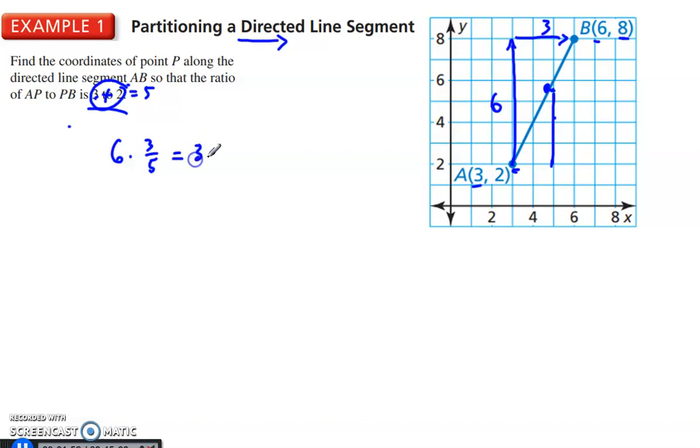3.6, so it goes up 3.6. And then this right here, we want 3 times 3 fifths, and that is 1.8. And so then I would just add on the 1.8 to this value right here, to 3. 3 plus 1.8 gives me 4.8.